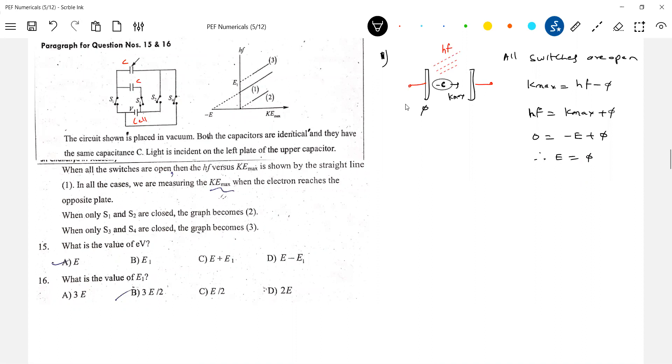And let's come for next one. When only S1 and S2 are closed, the graph becomes 2. I think here there is no cell. So when the electron reaches the other plate, it's like the same Kmax because there is no potential difference across it. Because all the switches are open. So with what kind of kinetic energy the electron is ejected, with the same kind of kinetic energy it strikes the other plate. I think we need to bother that statement here. When all switches are open, when the electron reaches the opposite plate.